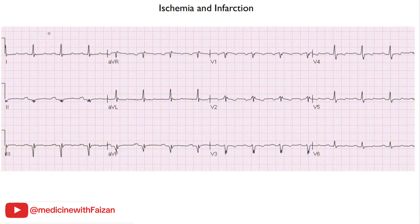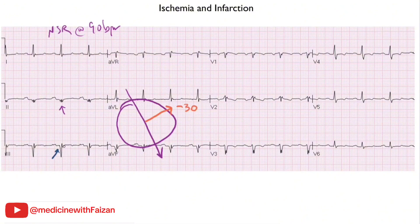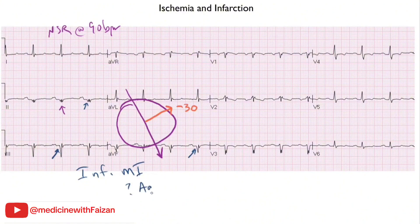Here we have a regular rhythm — normal sinus rhythm at about 90 beats per minute. Examining the limb leads, it is most isoelectric in lead 2, placing the axis at about minus 30 degrees — a left axis deviation. Looking at the QRS complex in the inferior leads, they have a very large Q wave. The initial deflection is downward in leads 2, 3, and AVF. Together with the left axis deviation, this is consistent with an inferior myocardial infarction of indeterminate age. There is a distinct lack of electrical signals going towards the inferior wall, which is why there is no R wave and everything is a negative deflection.